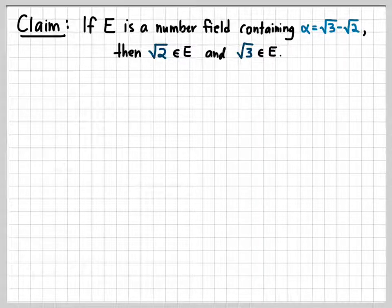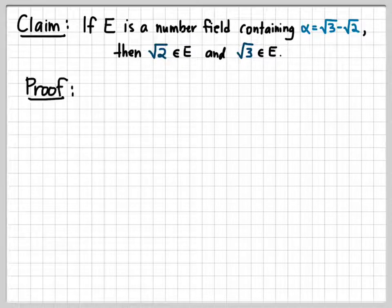So here's a fact that is definitely not obvious at first. If we have any number field E that contains the number √3 - √2, if that's all we know about it, then we can prove that that field must contain the square root of 2 by itself and the square root of 3 by itself. How do we prove such a thing?